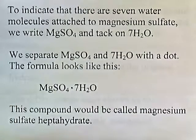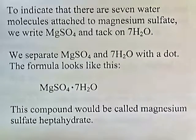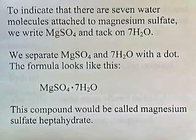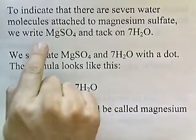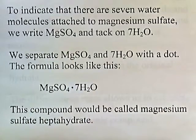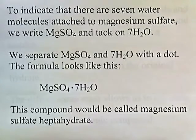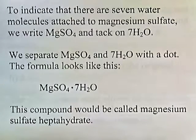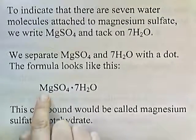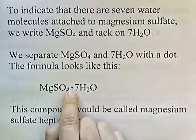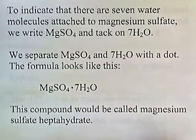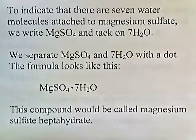To indicate that there are seven water molecules attached to the magnesium sulfate, we write magnesium sulfate and attach 7H2O. We separate magnesium sulfate and 7H2O with a dot. The formula looks like this: magnesium sulfate dot 7H2O. This compound would be called magnesium sulfate heptahydrate.